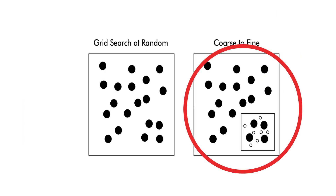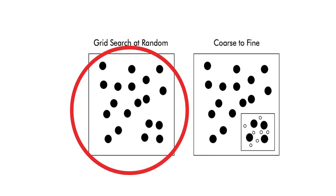Start with a coarse grid of widely spaced values, then zoom in on promising regions with finer granularity, or consider random search, which often finds good solutions more efficiently than grid search.